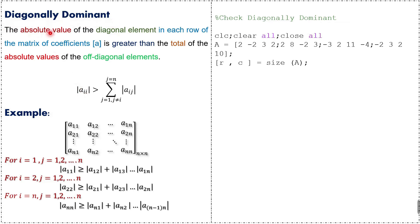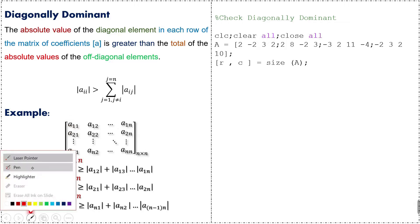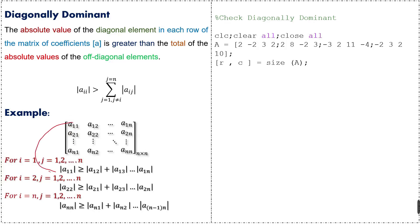A diagonally dominant matrix is one where the absolute value of the diagonal element in each row of the coefficient matrix is greater than the total of the absolute values of the off-diagonal elements. For example, we have an N×N matrix and we can see the diagonal elements.